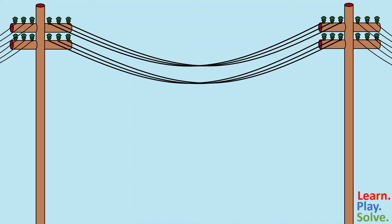When a rope, chain, or cable is supported only at its ends, the shape of the curve it assumes under its own weight is called a catenary.